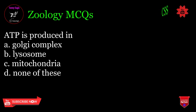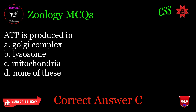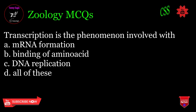ATP is produced in: A. Golgi complex, B. Lysosome, C. Mitochondria, D. None of these. Correct answer: C.